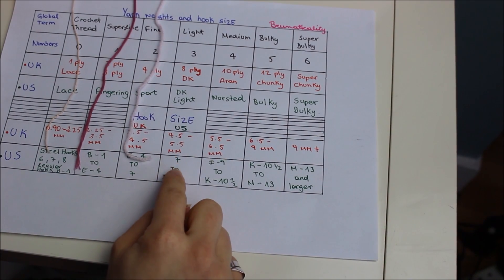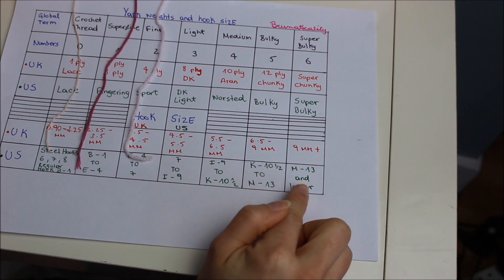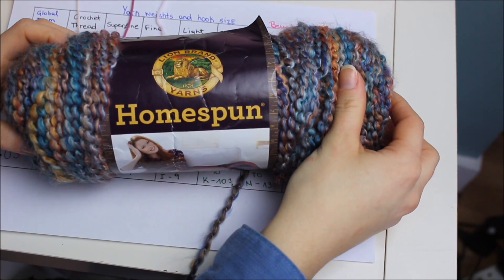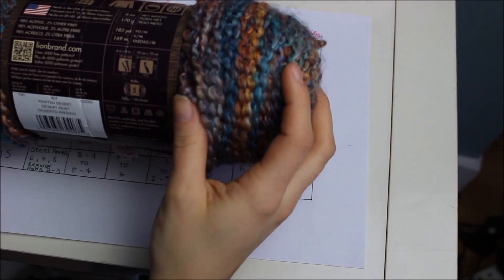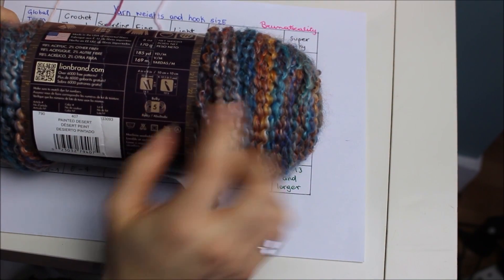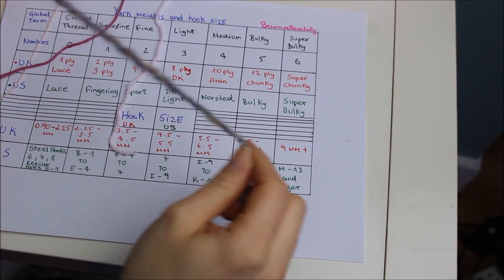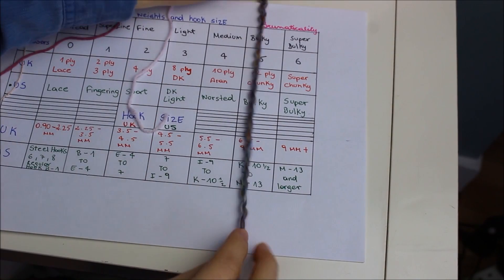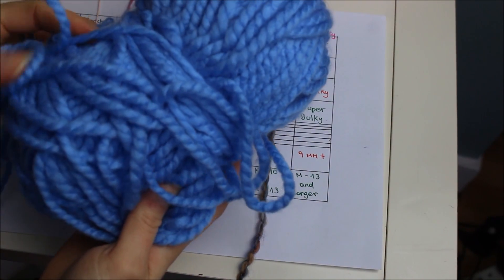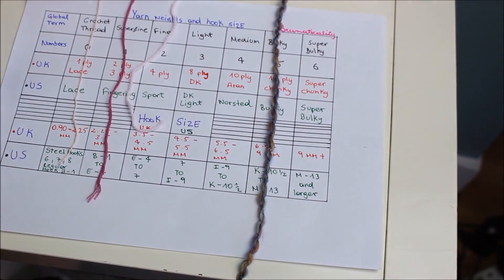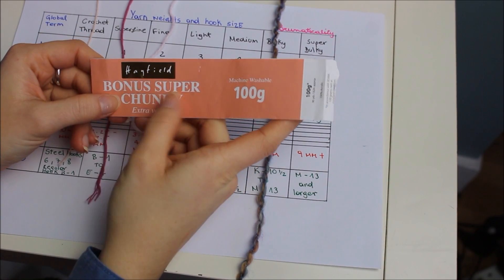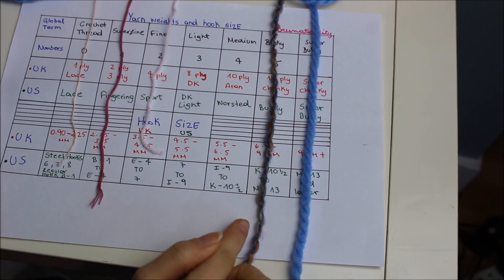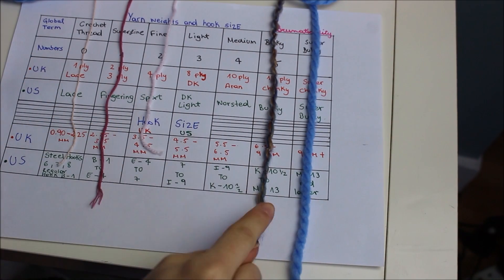I don't have any examples for number 3 and 4, but I do have examples for 5 and 6. This one here is a chunky one — number 5. At the back it says bulky, which is the US term. And for number 6, I have this one here which is very, very chunky — super chunky. This is the Hayfield yarn and it does say super chunky on the label. So you guys can definitely see the difference between all of them: here we have number 0, 1, 2, 5, and 6.